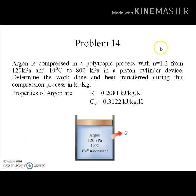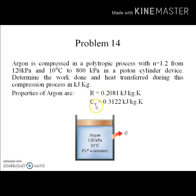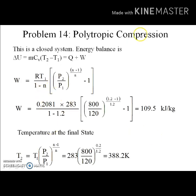The third problem deals with polytropic compression of argon, where the process follows p·V^1.2 = constant, so n = 1.2. The initial state is argon at 10 degrees centigrade and 120 kilopascal, being compressed to 800 kilopascal in a piston-cylinder device. We need to find the work done to compress the argon and the heat transfer during the process. The required properties are R and cv, whose values are given.